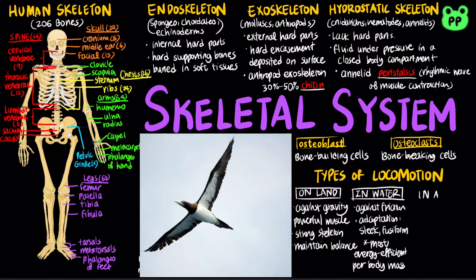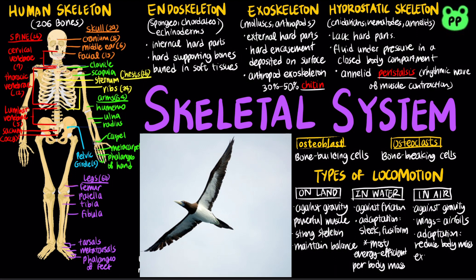Flying in air requires an animal to overcome the downward force of gravity. Wings are essentially airfoils that alter air currents. Many flying animals have adaptations that reduce body mass.